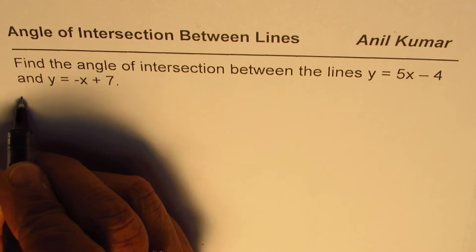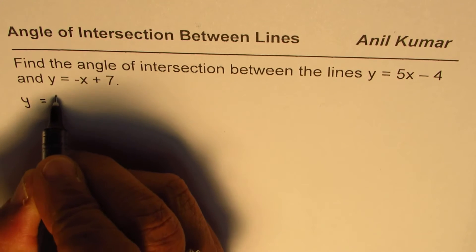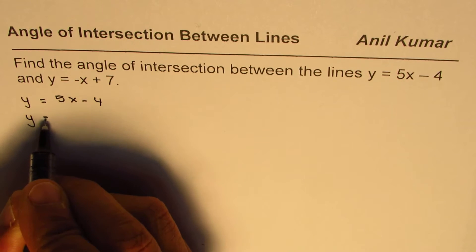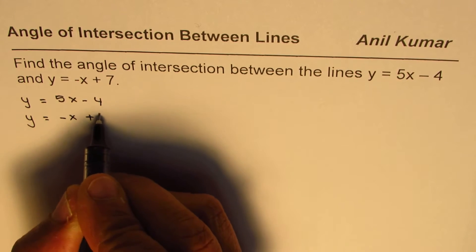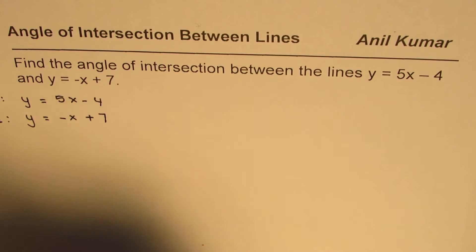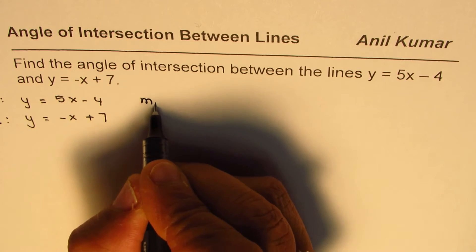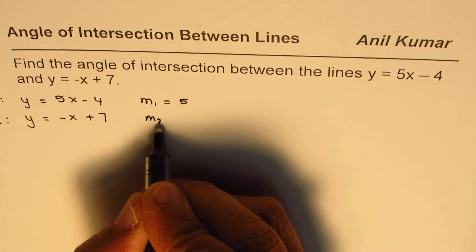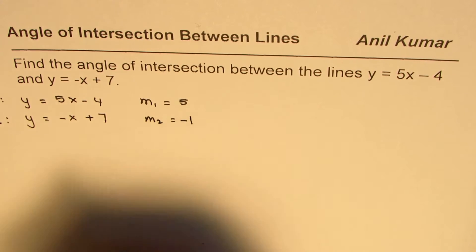So we are given two different lines. First one is y equals 5x minus 4. The second one is y equals minus x plus 7. So let's consider this to be line 1, that to be line 2. Then what is the slope of line 1? Slope of line 1 is 5 and slope of line 2 is minus 1.